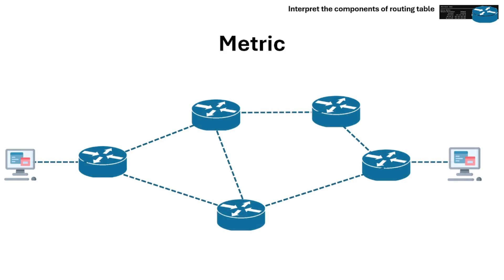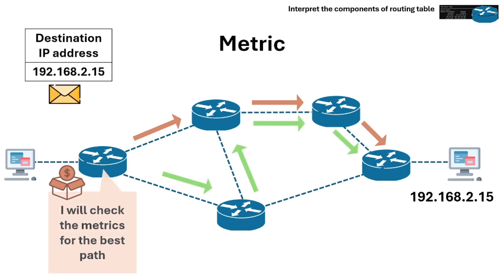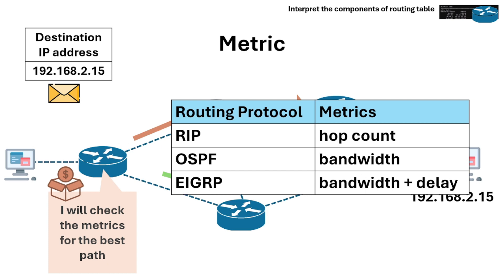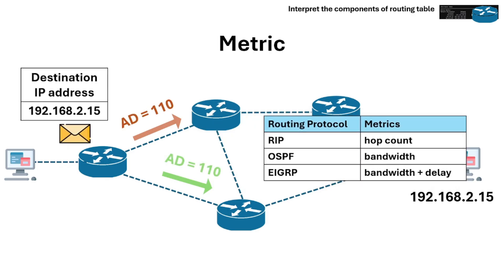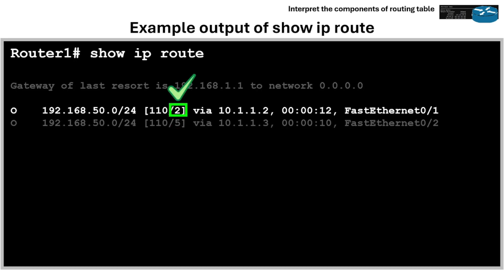Then there's the metric. The metric is the cost to reach the destination. Routers use metrics to determine the best path when multiple routes exist to the same destination. Each routing protocol calculates cost differently. The metric is used if two routes have the same AD — then the metric decides which to choose. In this routing table example, the metric is found as the second value in the brackets. Here, both routes are OSPF, but the metric of 2 is chosen over metric 5.